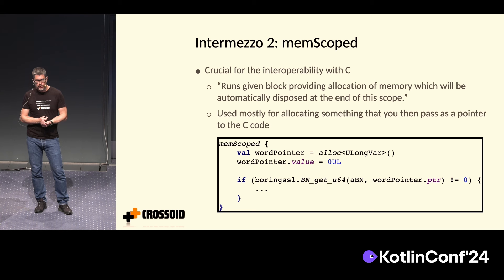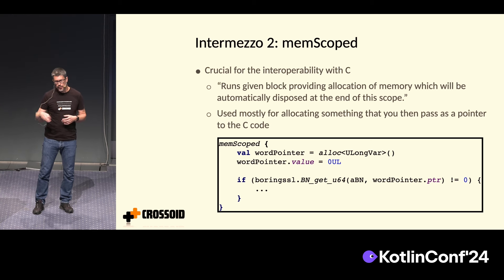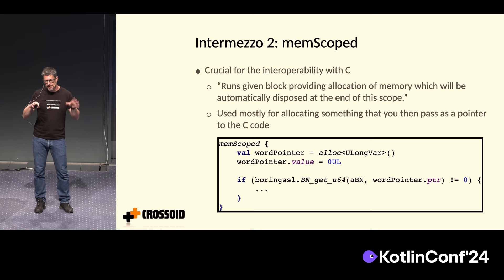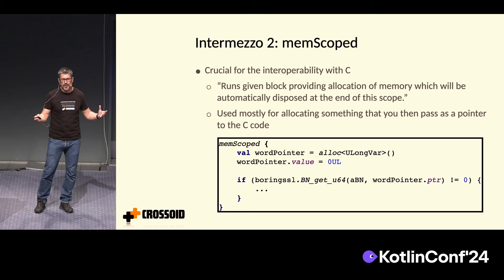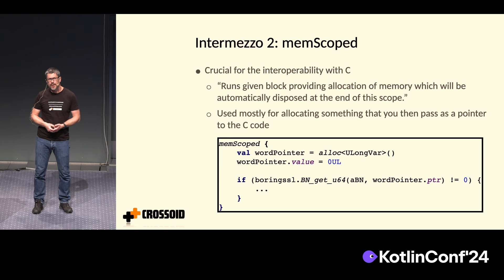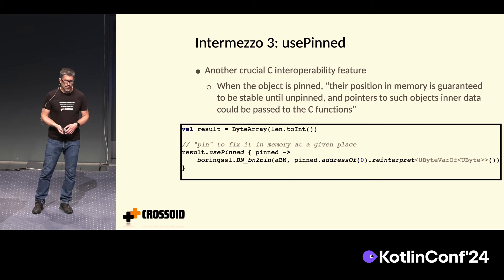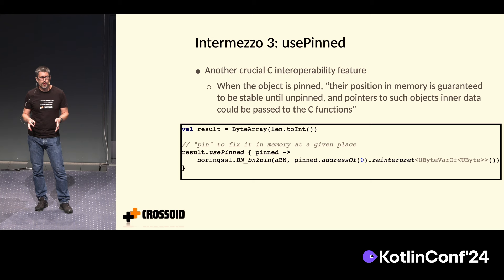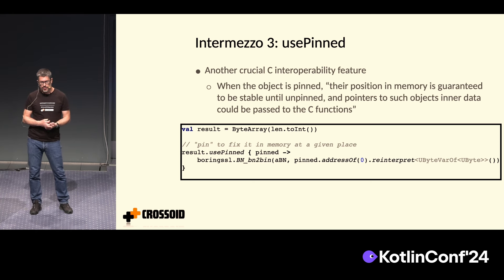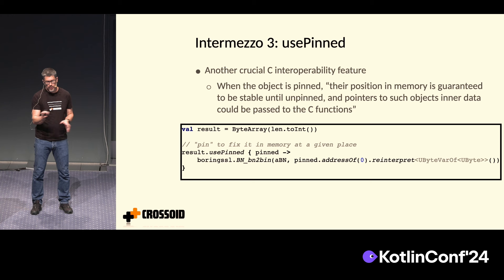Two things you will need to use: one is memscoped. If you want to allocate memory in a block, you do it inside memscoped — you can create something that allocates memory, pass it to C so it does the work, fills it with values, and returns it back. When memscoped ends, the memory is destroyed and you can't use it anymore. The other crucial thing was usePinned — if you have an array, you're able to provide a pointer to it to pass to C. Both are Kotlin features that were crucial to making this work.